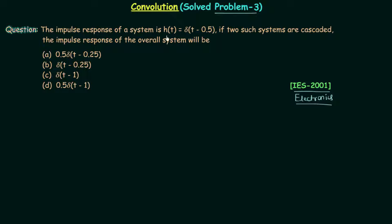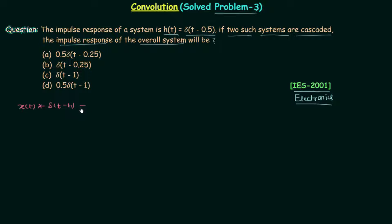The impulse response of a system h(t) is equal to δ(t - 0.5). If two such systems are cascaded, the impulse response of the overall system will be — that is our problem, with four options given. The property I will use first: whenever you convolve any signal x(t) with δ(t - t₁), the result is x(t - t₁). You replace t by t minus t₁, and we will use this property to obtain the correct answer.